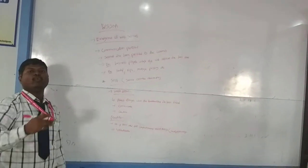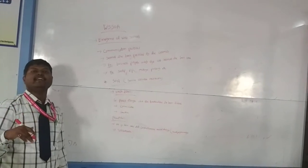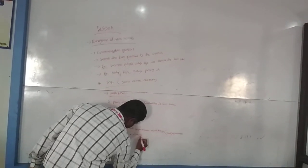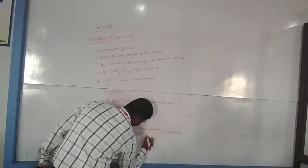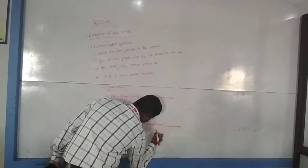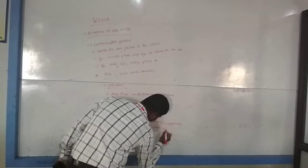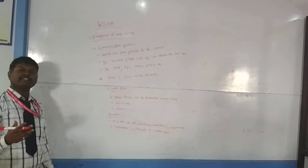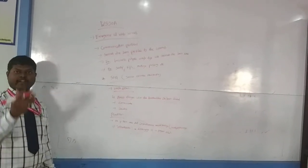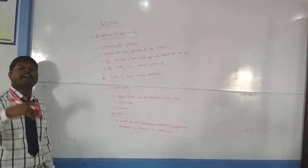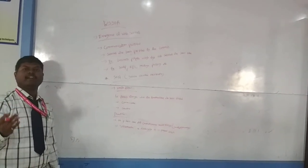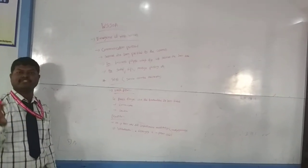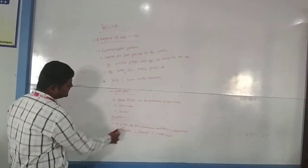Orchestration means we are dividing the modules and arranging them in a proper order — the order in which the customer will be requesting the services. For example, if customer one has requested a particular service, that first customer should get the result of the request he made. So this is how proper order works, and it is managed using orchestration.